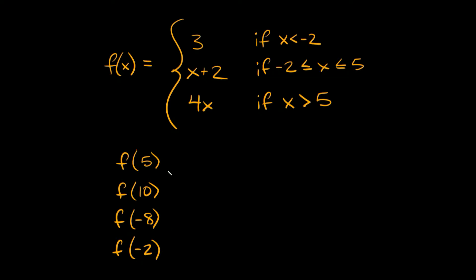We're given four different numbers to evaluate: 5, 10, negative 8, and negative 2. We're going to figure out which definition each of these numbers fits into first, and then use the corresponding function. Each number is going to fit only one of these definitions — it's not going to fit into two different ones.